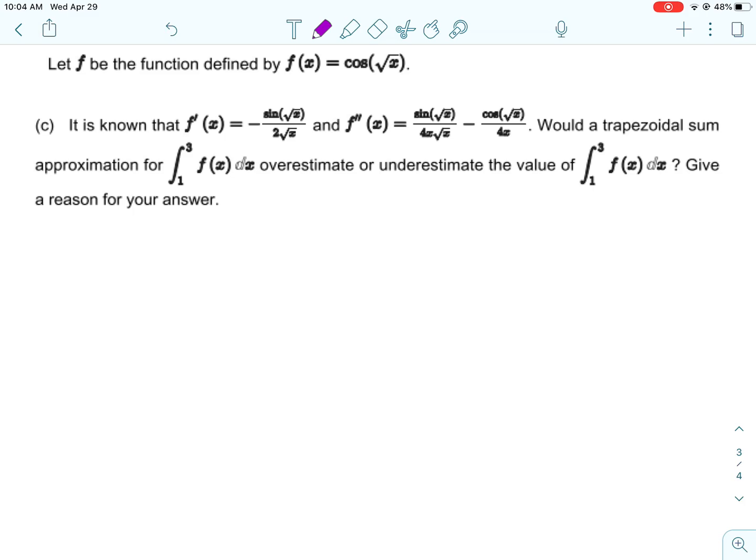Okay, so for C, it is known that f'(x) is the negative sine of the square root of x over 2 square root of x. And f''(x) is the sine of the square root of x over 4x square root of x minus cosine of the square root of x over 4x. Would a trapezoidal approximation of the integral from 1 to 3 of f(x) dx overestimate or underestimate the actual value of that integral? And then we're going to give the reason. So to determine the over and under estimations for trapezoidal, you need to know concavity.